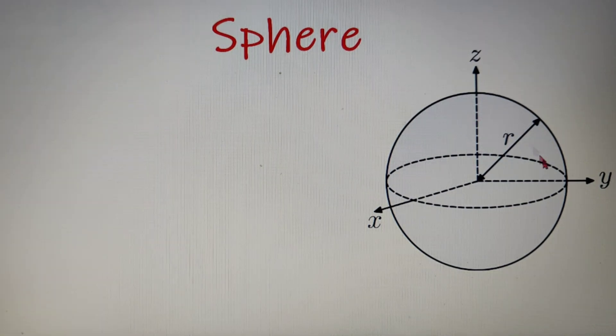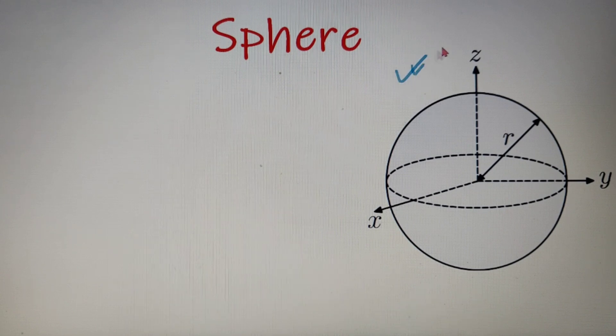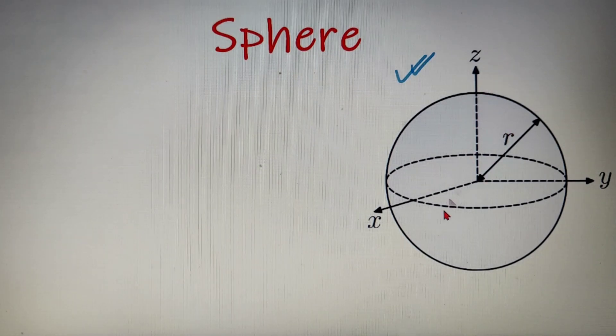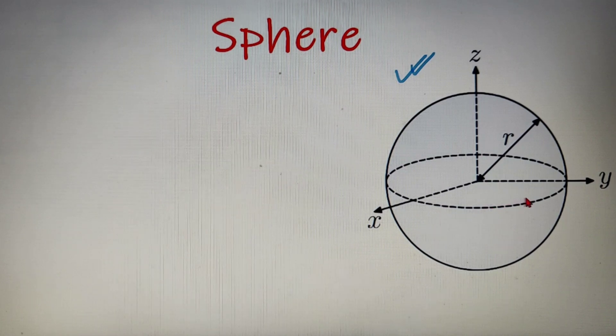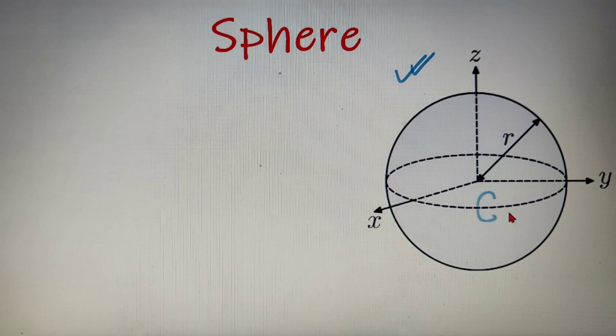Now the three-dimensional shape that you can see over here is a sphere. Over here you can see that there are three axes x, y, and z, and the intersection point of these three axes is called the center of the sphere.